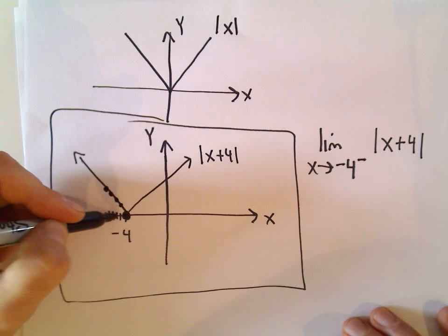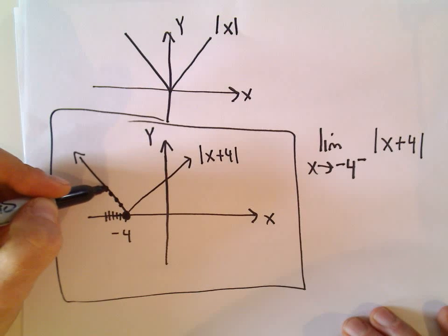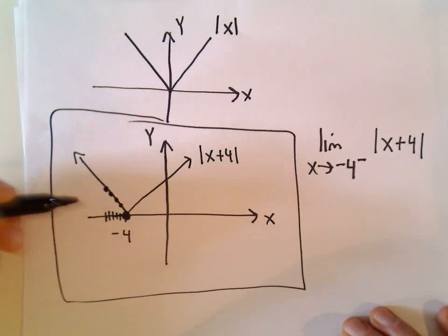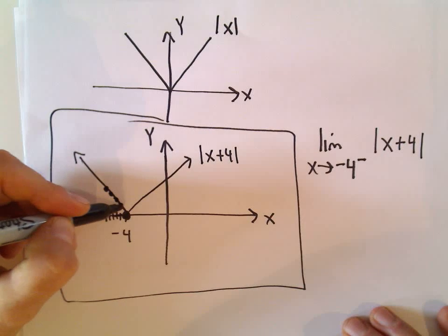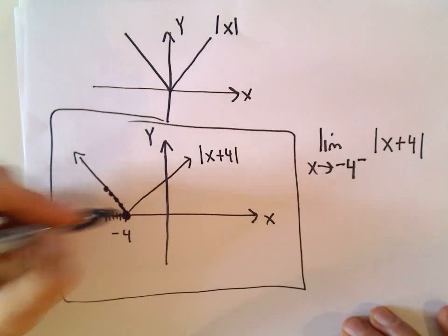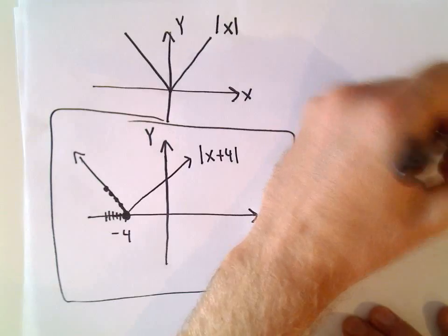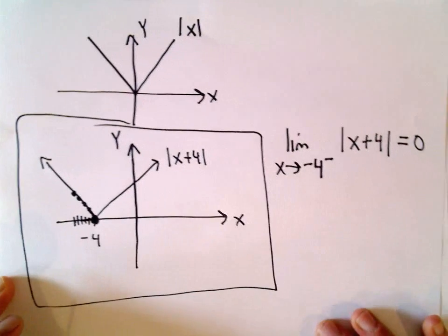Well, as x gets closer and closer to negative 4, the y values on the graph look like they're getting closer and closer to the y value of 0. And that would simply be our answer in this case.